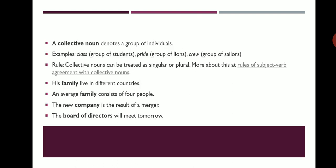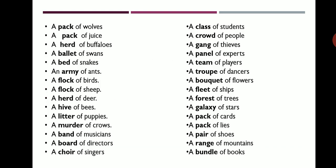Collective nouns denote a group of individuals — examples: team, gang, crew, family. Collective nouns can be treated as singular or plural. 'His family live in different countries.' 'An average family consists of four people.' 'The new company is the result of a merger.' 'The board of directors will meet tomorrow.' All these contain collective nouns.